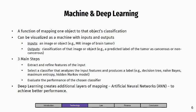What is machine learning? From a mathematical perspective, it's a function — a mapping from one object to the class that the object belongs to. You can visualize the mapping as a machine from inputs to outputs. The inputs could be an image, for example a MRI image of a brain tumor, whereas the outputs could be a predicted class — whether this tumor is cancerous or not.